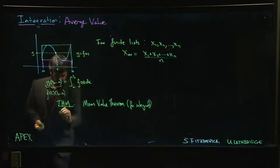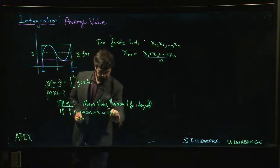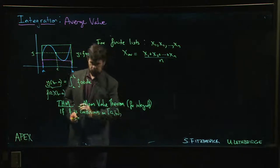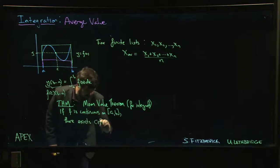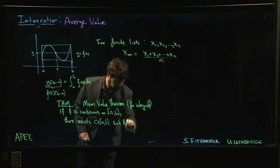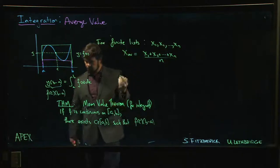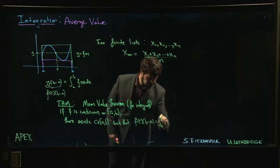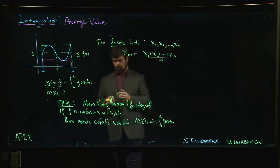The mean value theorem for integrals says that as long as f is continuous on [a, b], this c exists. There is actually a c somewhere between a and b such that f(c) times b minus a is equal to the integral from a to b of f(x) dx.